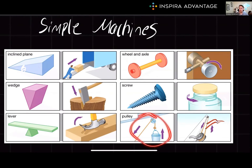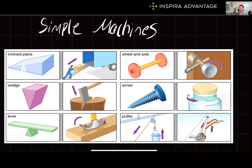Next we have the pulley. The MCAT loves testing pulleys. These consist of a wheel that rotates around an axle with a rope or cable wrapped around the wheel's groove. Pulleys can change the direction of force, and when used in a system of multiple pulleys, can also multiply the force.